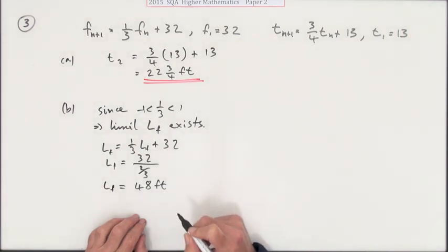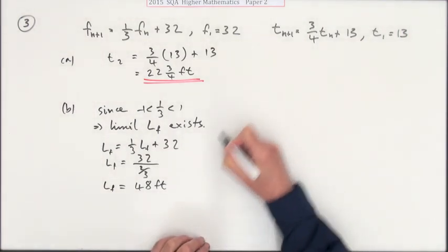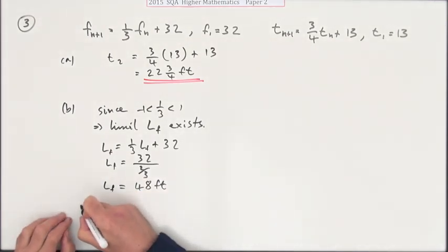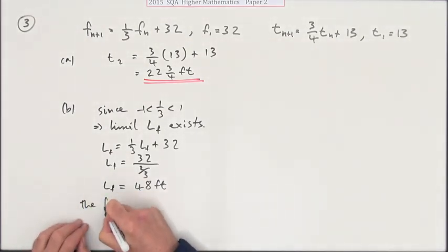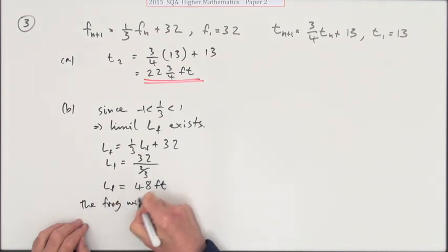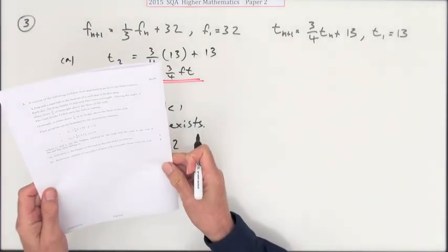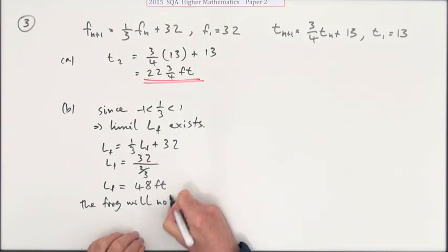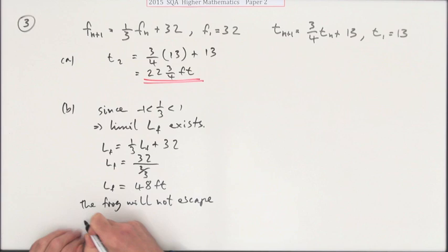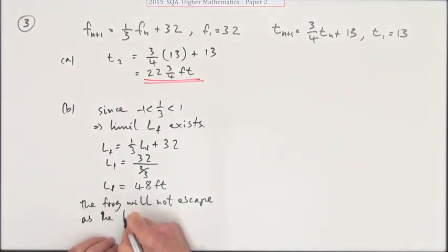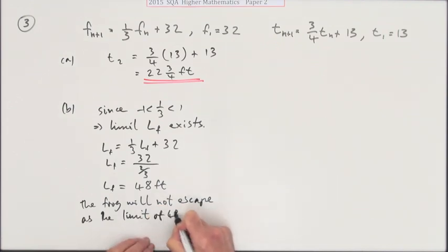48 feet, two feet short. So for this one you can see the frog, will it escape or will it not escape? The answer is the frog will not escape as the limit of 48 is less than the 50 required.